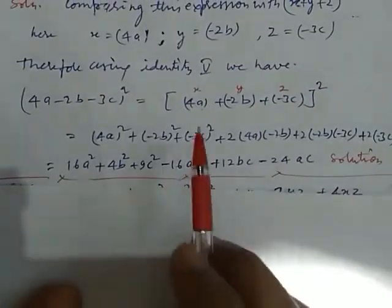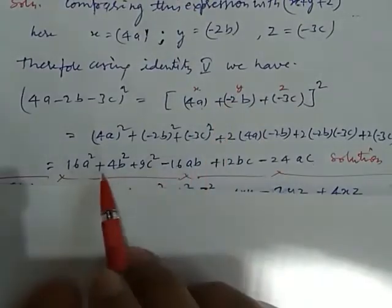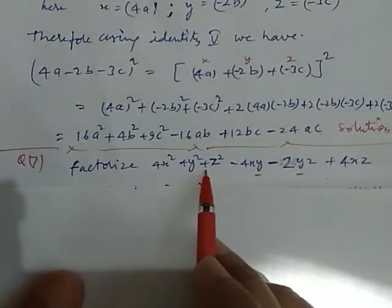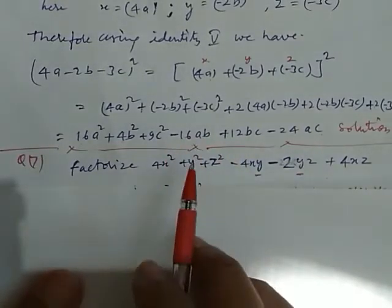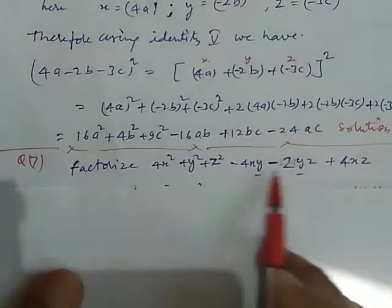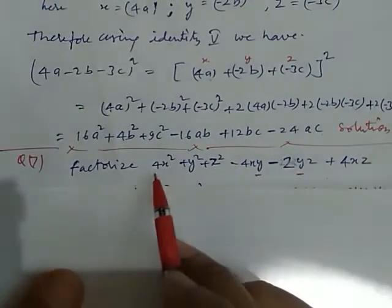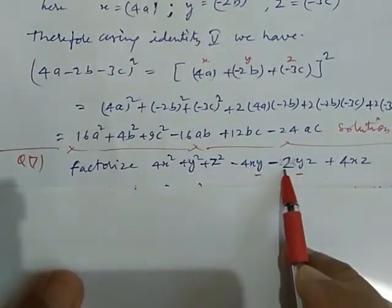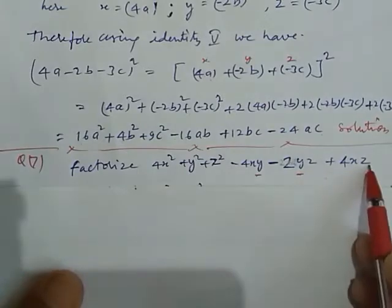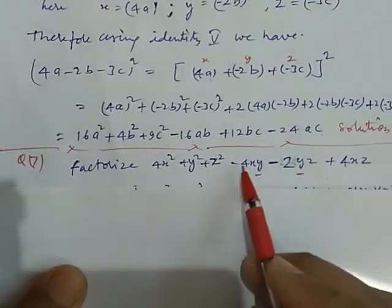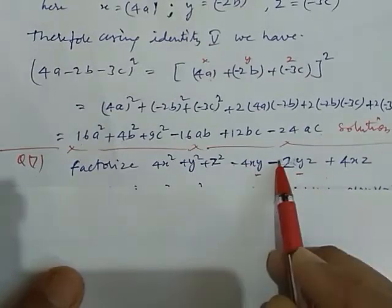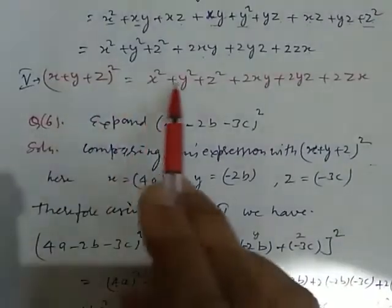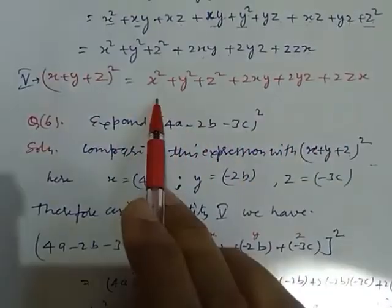So, this way we can use identity and get our solution directly. Now, factorize this. This is the converse of that, because here the expanded form is already written: 4x squared plus y squared plus z squared minus 4xy minus twice yz plus 4xz. First, look here — these two terms having negative sign, but this term having positive sign.